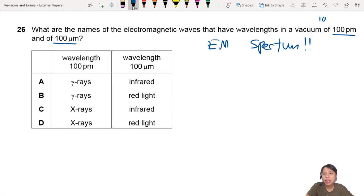The first one here is 100 pico. What is pico? You need to know pico. Pico is times 10 to the negative 12 meters. That's really small. And the other one is 100 times 10 to the negative 6 meters.